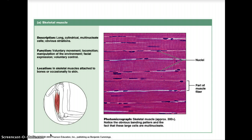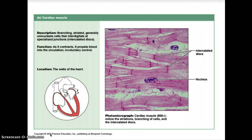The next type is cardiac muscle — these are branching, striated, generally uninucleate cells that interdigitate at specialized junctions called intercalated discs. The function is that as it contracts it propels blood into the circulation, and it is under involuntary control. Cardiac muscle is only found in the walls of the heart; its contraction pumps blood and accounts for the heartbeat.